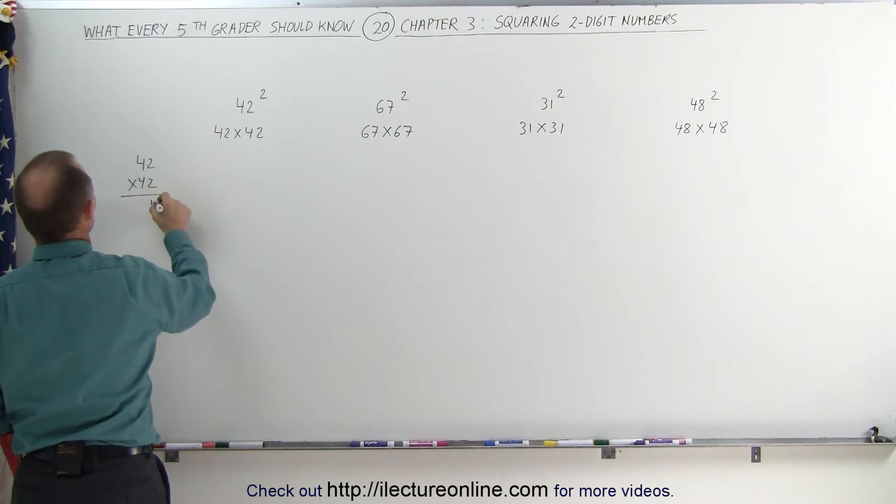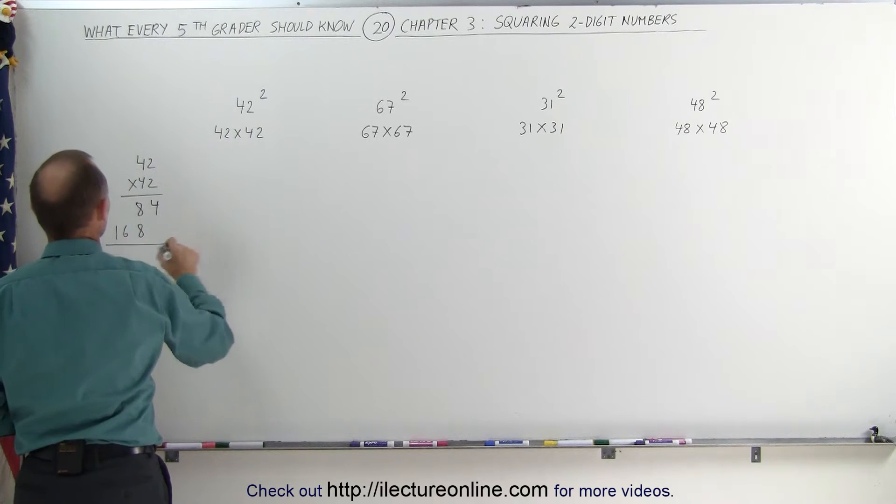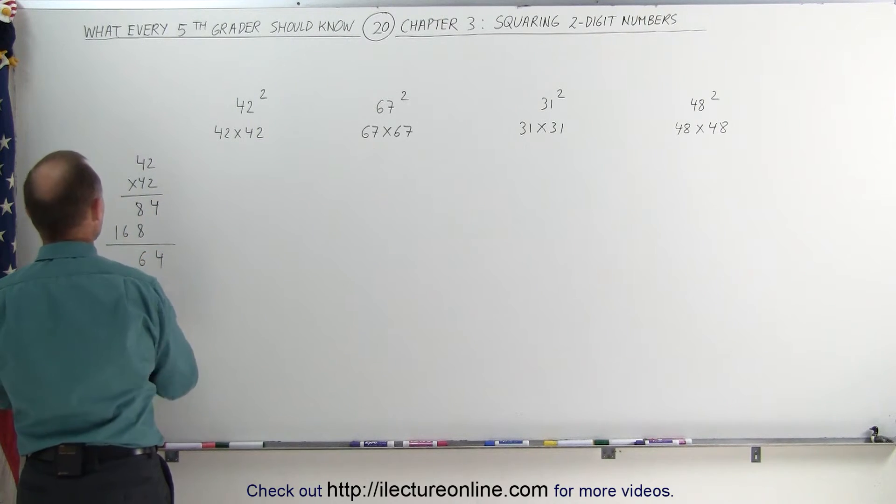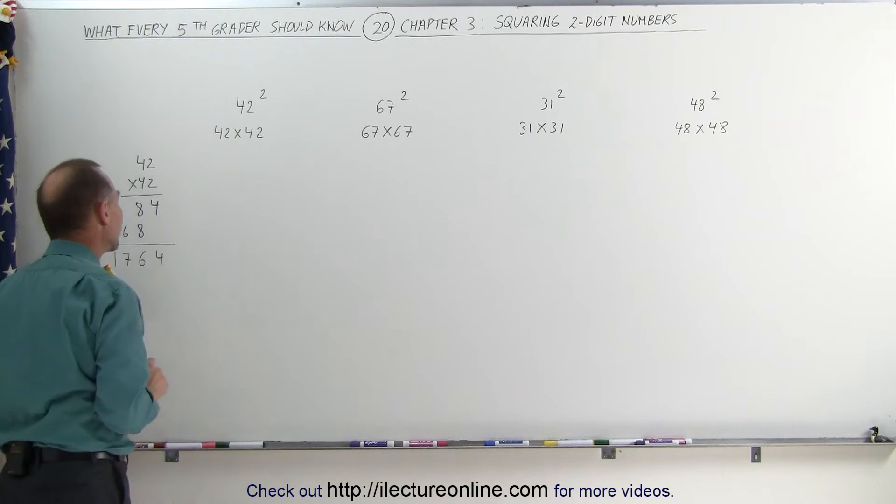2 times 2 gives you 4. 2 times 4 gives you 8. 4 times 2 gives you 8, and 4 times 4 gives you 16. When you add them all together, you get 4. 8 plus 8 is 6. Remember 1. Add that to the 6, you get 7, and then you get 1. 1764.